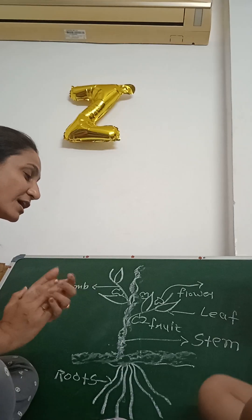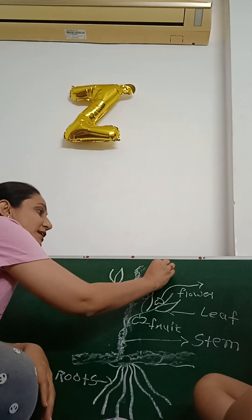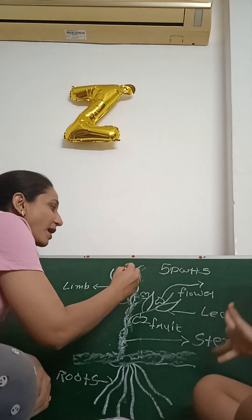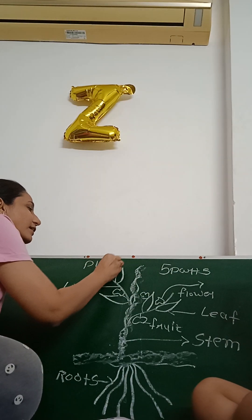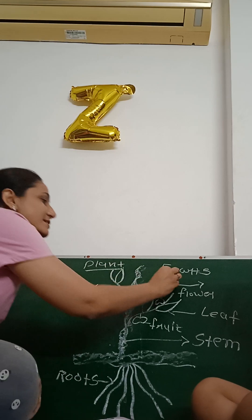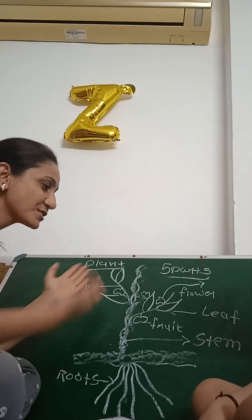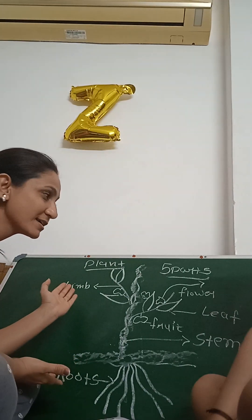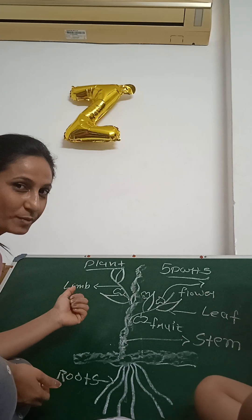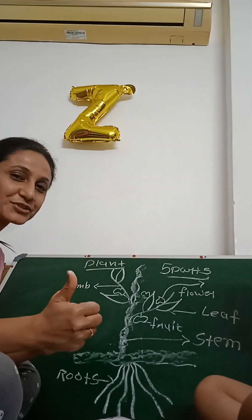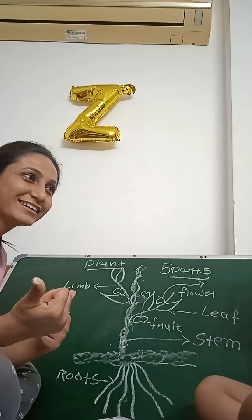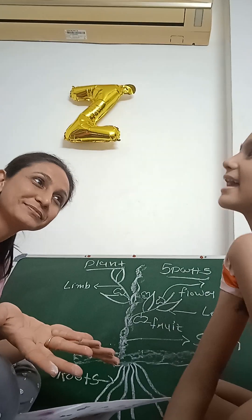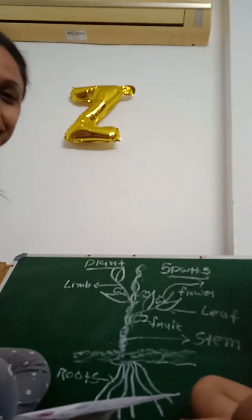Very good. So how many total parts does our plant have? Five parts. Five parts of our plant. So, this is our diagram of plants — parts of plants. I hope all of you have enjoyed this video. Please like, share and subscribe. Thank you. Namaste. Bye.